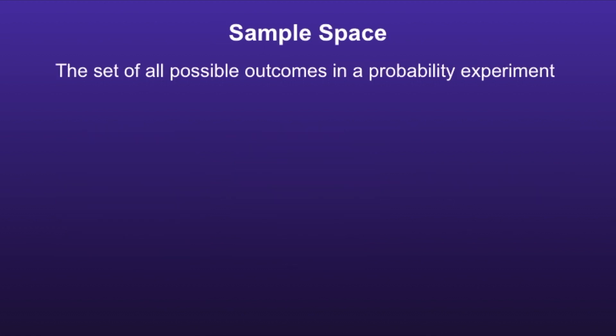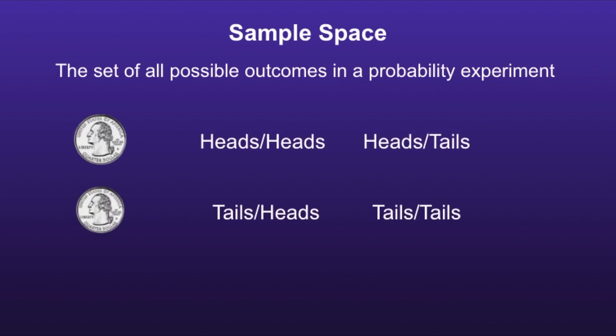Sample space is the set of all possible outcomes in a probability experiment. The sample space of tossing two coins in a row would be heads-heads, heads-tails, tails-heads, and tails-tails, because these are all the possible outcomes when tossing a coin two times in a row.